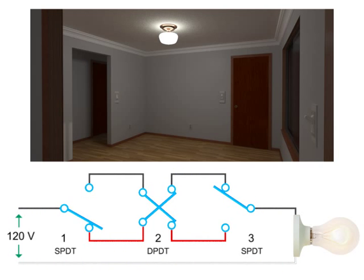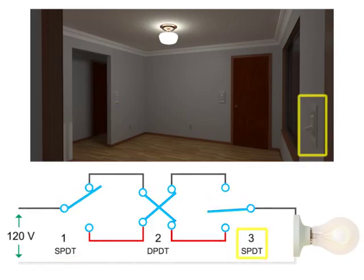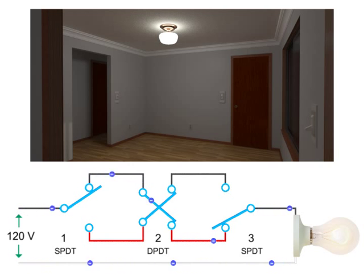If we change the position of both switch one and three while switch two remains in the crossover position, the current will still flow, this time from the black wire to the red wire to complete the circuit and light the bulb.